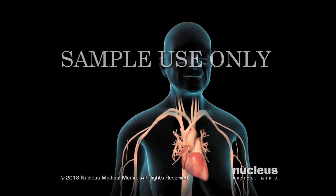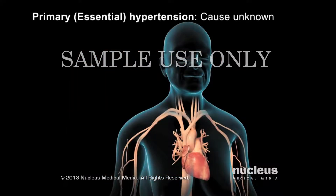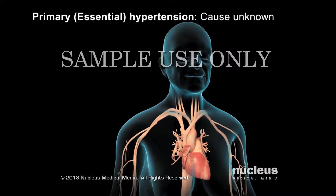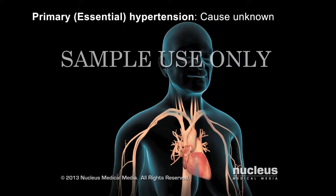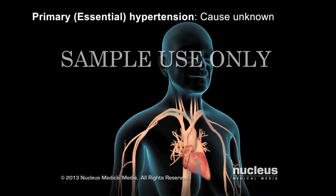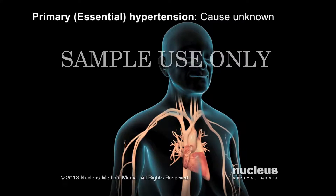In most cases, the cause of high blood pressure, or hypertension, is unknown. This type of high blood pressure is called primary, or essential hypertension.